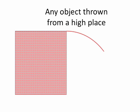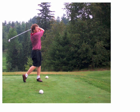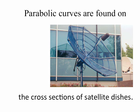Any object thrown from a high place also falls in a parabolic curve. If you're a golfer, that tee shot you take — again, a parabola. So parabolas are pretty much everywhere; we cannot hide from them, they're everywhere.